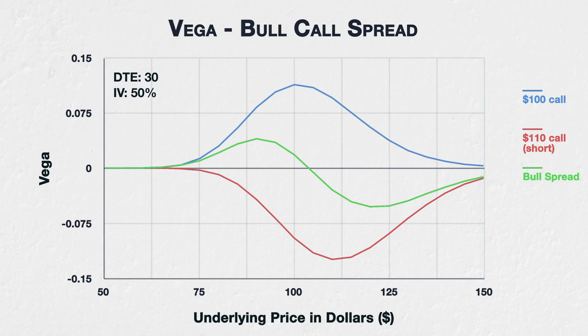We've used a vertical spread here, but the same holds true for other spreads and any other option combination you can think of. Underlying price movement, implied volatility, and time will all still have an effect on the vega of multi-leg option strategies, just as they do for individual options. To get the total vega for all legs combined, we can simply sum the vega for all the individual legs. Notice also that because the vega of each leg partially cancels out the other, the magnitude of the effect of implied volatility is considerably less than for either of the individual options.